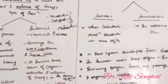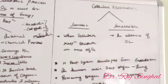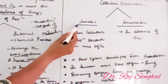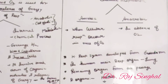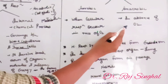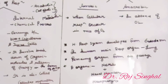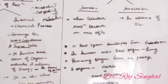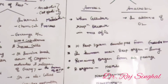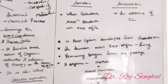Cellular respiration, if it occurs in the presence of oxygen, is termed aerobic respiration. If it occurs without the presence of oxygen, it is known as anaerobic respiration. Thus, cellular respiration is broadly classified as aerobic and anaerobic respiration.